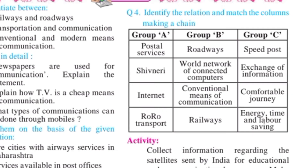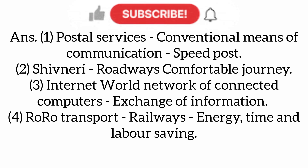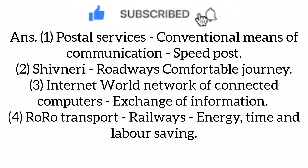Question number four: identify the relation and match the columns to make a chain. First: postal services falls under conventional means of communication, and from that, speed post is the example. Second: your area stream or roadways leads to a comfortable journey. Third: internet — the internet is a world network of connected computers, and from that comes the exchange of information. Last one: rural road transport relates to railway, saving energy and time.